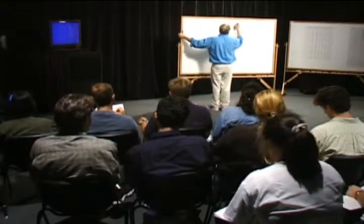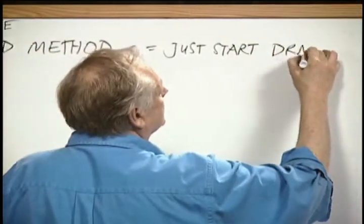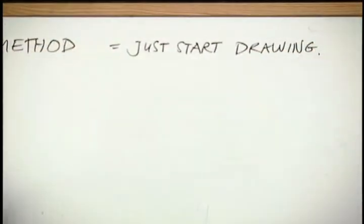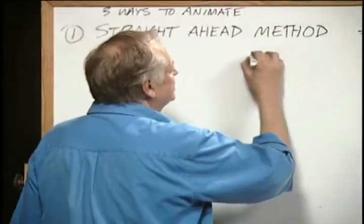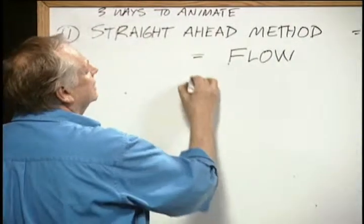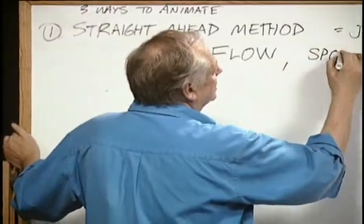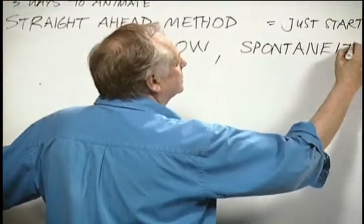The straight-ahead method is to just start drawing — like a kid in the corner of the math book. You just get your paper and you think what you're going to do. Take a deep breath and start. What happens is that you get a wonderful flow from it — flow, spontaneity. Things occur. Inventions occur. Strange things occur.